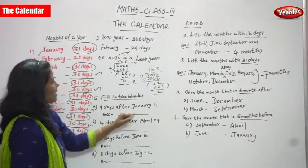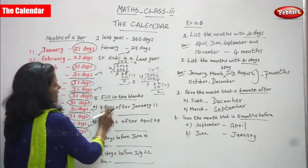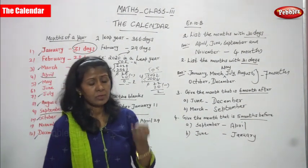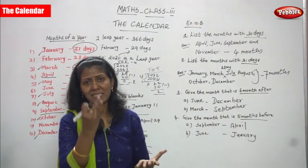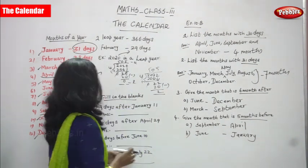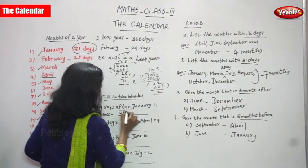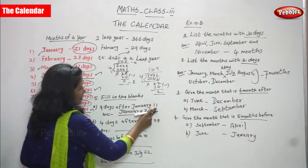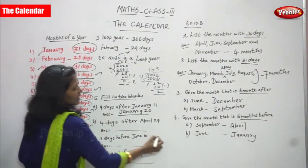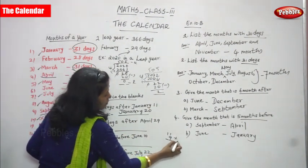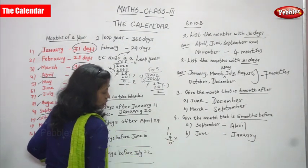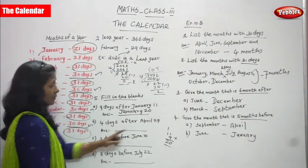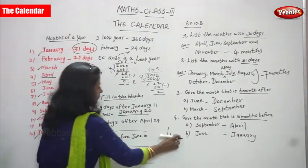Fill in the blanks: 9 days after January 11. You should not consider January 11. Count: 12, 13, 14, 15, 16, 17, 18, 19, 20. The answer is January 20. Simply, you can add: 11 plus 9 equals 20. So the answer is January 20. 'After' means addition.